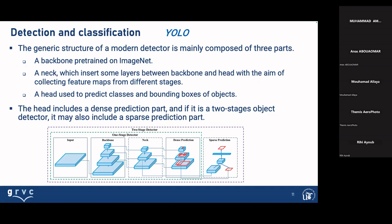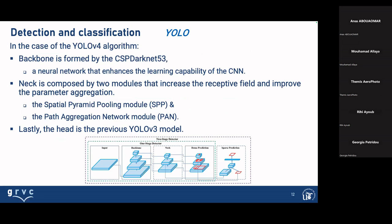The architecture of this model uses a backbone retraining on CSPDarkNet. It has a neck which inserts some layers between the backbone and head with the aim of collecting feature maps from different stages. The head is used to predict the classes and bounding boxes of the object, and includes a dense prediction part with a two-stage object detector and a sparse detection part. For the backbone, YOLOv4 uses CSPDarkNet-53, a neural network that enhances the learning capability of the CNN. The neck uses a Spatial Pyramid Pooling module and a Path Aggregation Network. The head uses previous YOLO models.